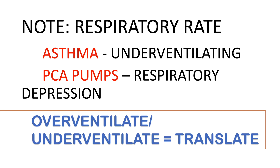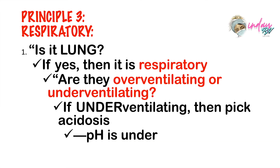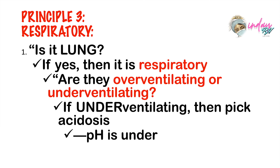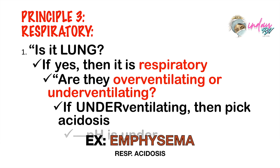For example, you have a patient who suffered from near-drowning. What could be the acid-base balance? Apply your principle. Is it lung? Yes, it is lung. Is the patient over-ventilating or under-ventilating? Your patient is near-drowned, so the patient might be under-ventilating. So the patient is having respiratory acidosis. Now another one: you are caring for a patient with a diagnosis of emphysema. Is it lung? Yes. Then consider it to be respiratory. Are they over-ventilating or under-ventilating? In emphysema there is constriction, so the patient is under-ventilating. So consider the patient to be respiratory acidosis.